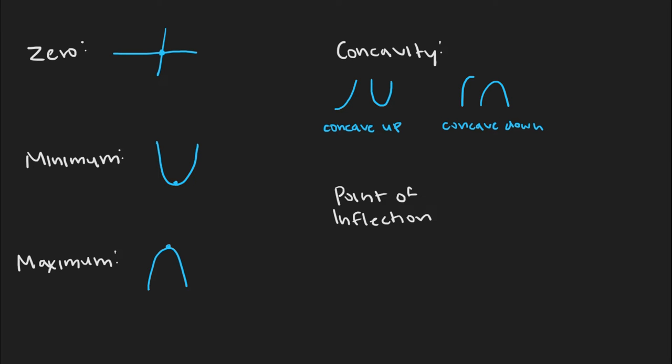A point of inflection is the point where the concavity changes. I like to think of this as the middle point between an upside-down bowl and an upright bowl. This might look like this, or it could also look like this.